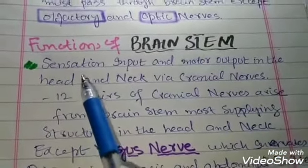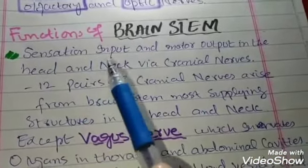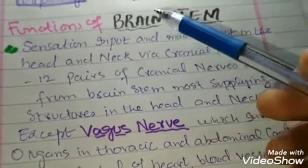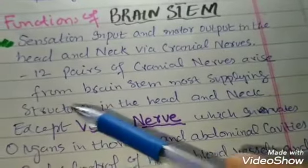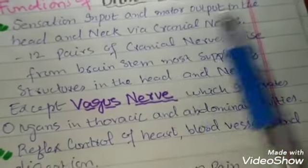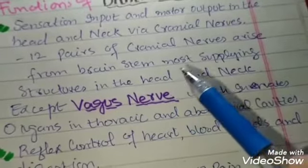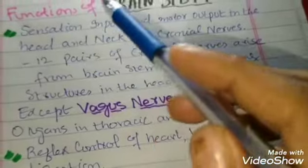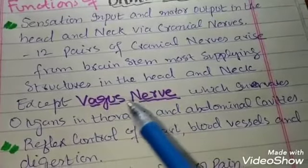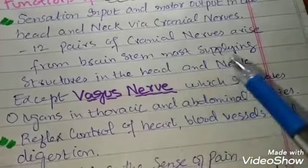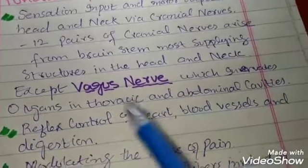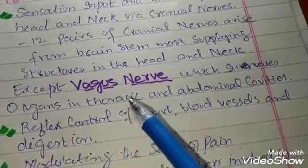The functions of the brainstem are: first, sensation input and motor output in the head and neck via cranial nerves. All the muscles in the head and neck are controlled by the brainstem. Twelve pairs of cranial nerves arise from the brainstem, most supplying structures in the head and neck — including hearing, swallowing, scalp sensation, and eye movement. The vagus nerve, however, originates from the brainstem but innervates organs in the thoracic and abdominal cavities, including the lungs, diaphragm, and intestines.